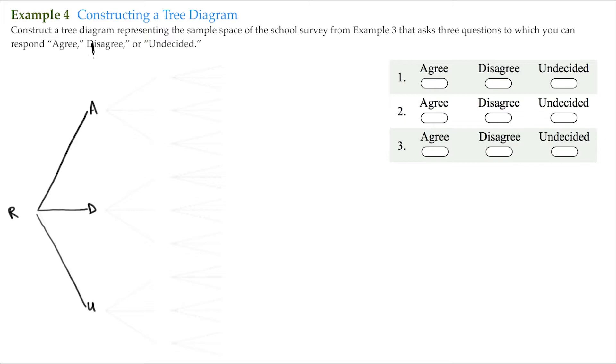If I was to answer agree to the first question, I still have agree, disagree, or undecided that I could answer for the second question. So I continue with my branches: agree, disagree, and undecided.